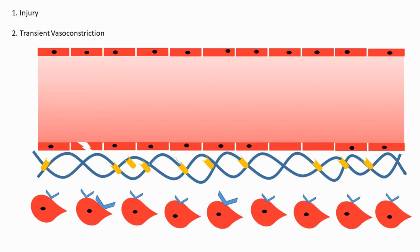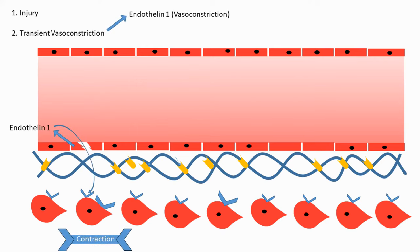However, once blood vessels are damaged, they can no longer release nitric oxide and PGI2, so they favor the procoagulant state. The damaged endothelial cells instead release a substance called endothelin 1. Endothelin 1 then acts on the smooth muscles present beneath the subendothelial connective tissue, causing them to contract and leading to vasoconstriction.